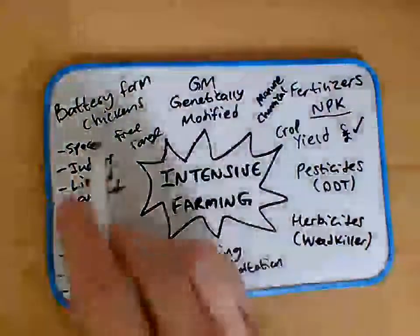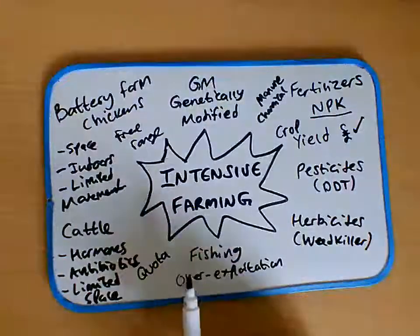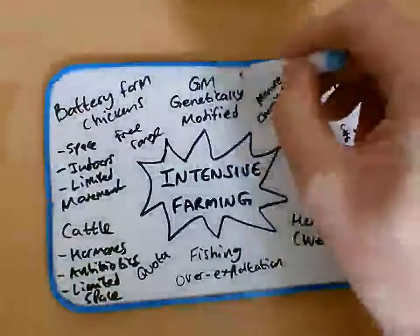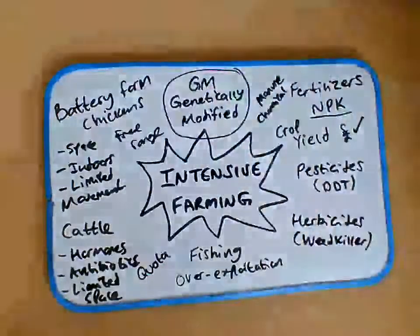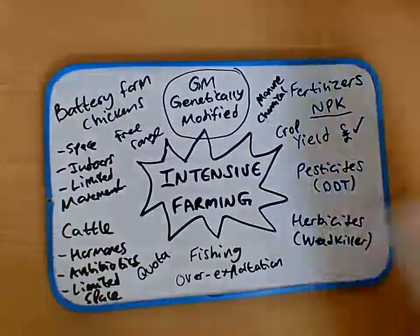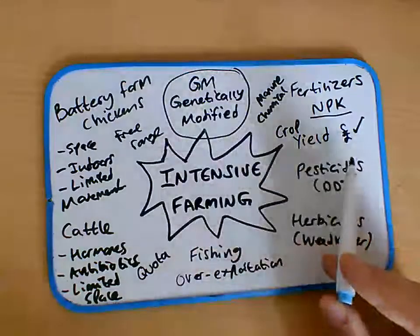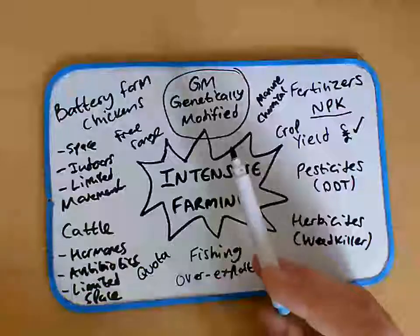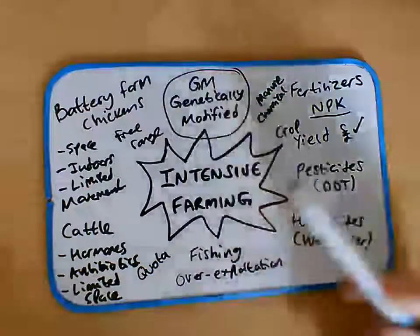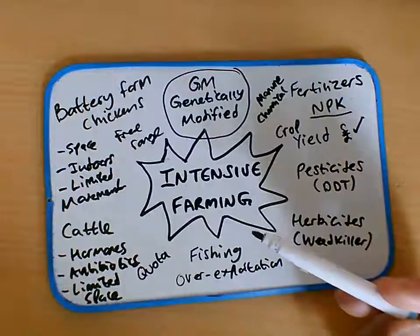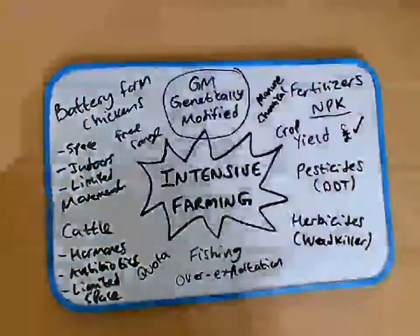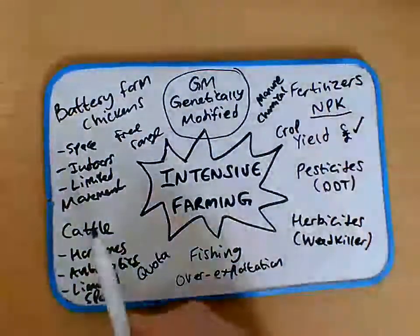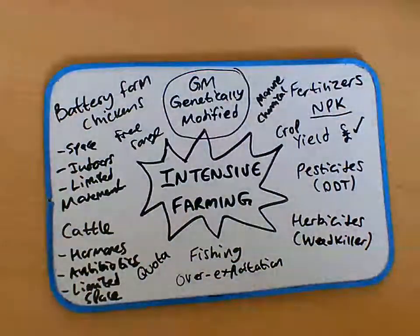We also have free range, where chickens and cattle can actually roam and exercise. Both plants and animals can also be genetically modified — GM — so they can be modified to grow faster and grow healthier. Some people don't like this, so we have GM-free foods like certain honeys where no genetic modification is involved. So that's intensive farming of plants and animals.